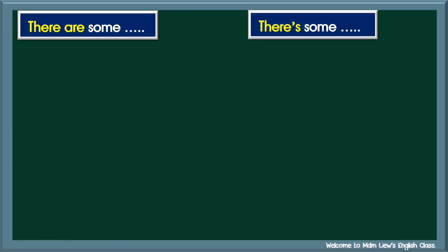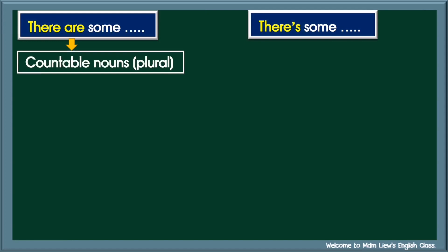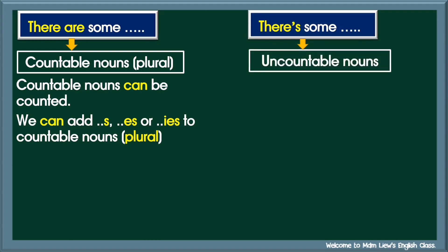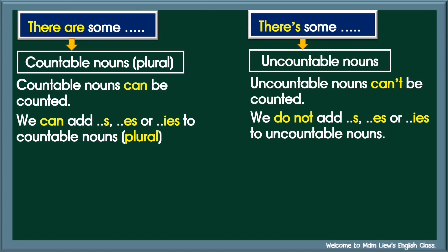Let's revise there are some and there's some. Remember, there are some is used with countable nouns in the plural form. Countable nouns can be counted. We can add S, ES, or IES to countable nouns in the plural form. Whereas, there's some is used with uncountable nouns. Uncountable nouns can't be counted. We do not add S, ES, or IES to uncountable nouns.